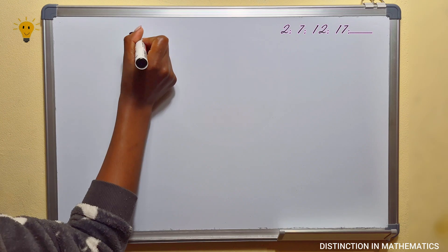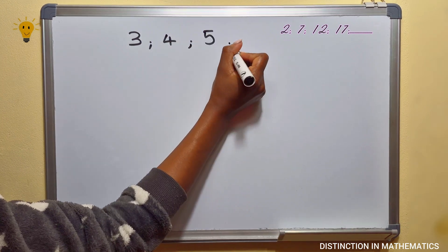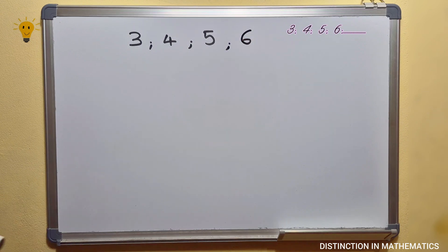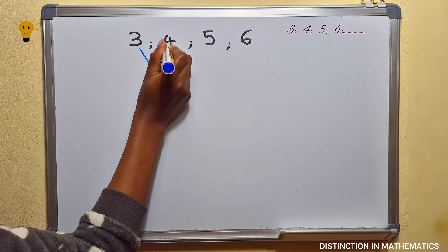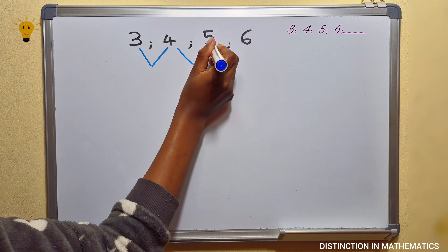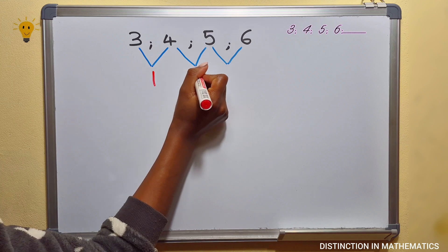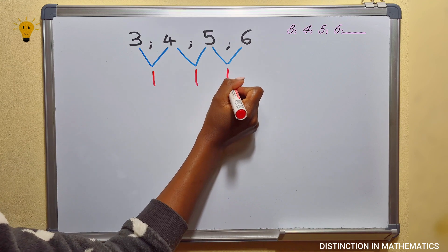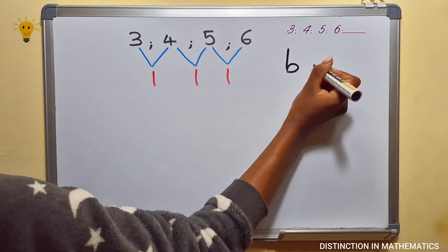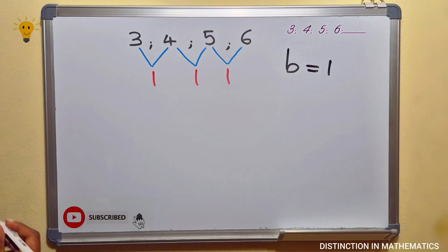Let's move on to a different sequence. Before you look at the questions, make sure you find the value of b, which is the difference between these numbers. 6 minus 5 is 1, 5 minus 4 is 1, and 4 minus 3 is 1. To go from 3 to 4, you add 1. To go from 4 to 5, you add 1. To go from 5 to 6, you add 1. So definitely this is a linear number pattern. If you plot these numbers on a graph, they will form a straight line.